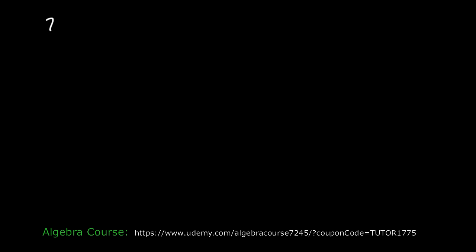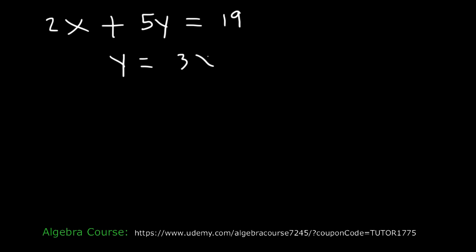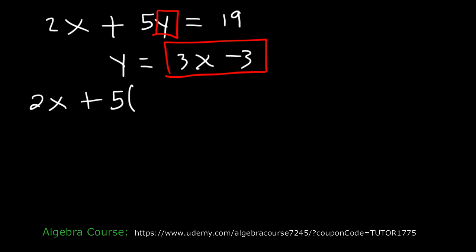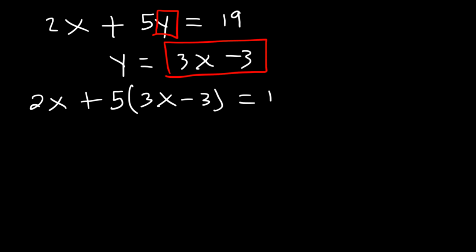Here's another problem. Let's say that 2x plus 5y is equal to 19, and also that y is equal to 3x minus 3. The setup is a little different — feel free to pause the video and try this example. Because we have y by itself in the second equation, we can replace y in the first equation with 3x minus 3. So we'll have: 2x plus 5 times (3x minus 3) is equal to 19.